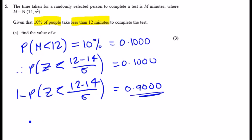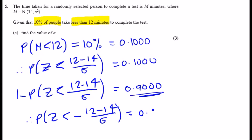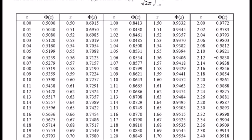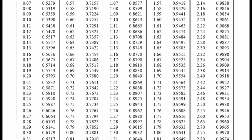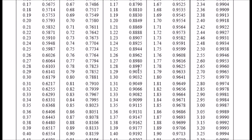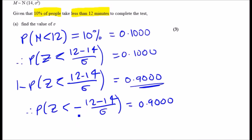This can be written as P(Z < −(12−14)/σ) = 0.9000. Now we can equate the argument to the z-value corresponding to 0.9000. Going back to the table, the closest probability to 0.9000 falls at approximately 1.28, so −(12−14)/σ = 1.28.